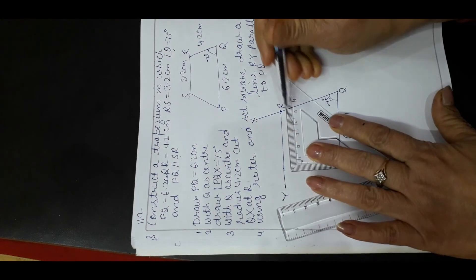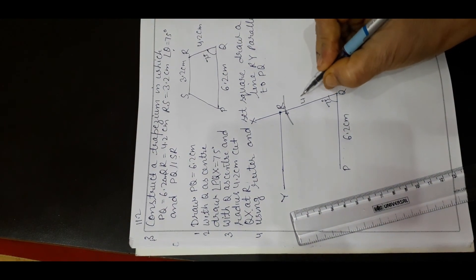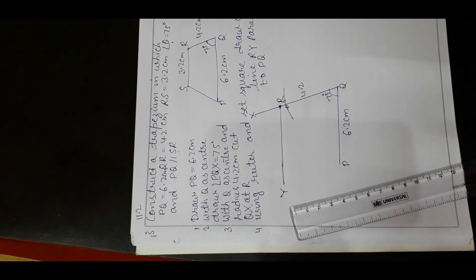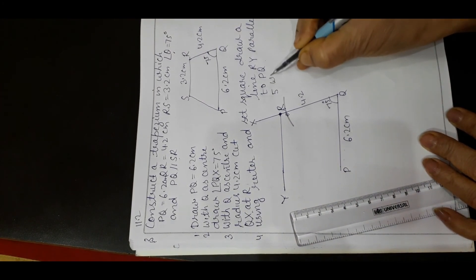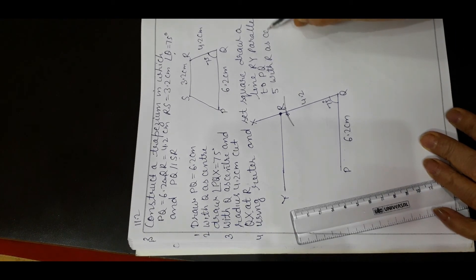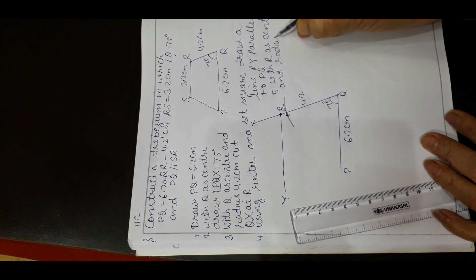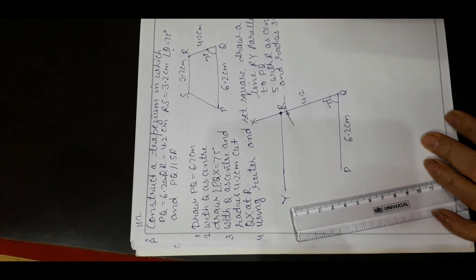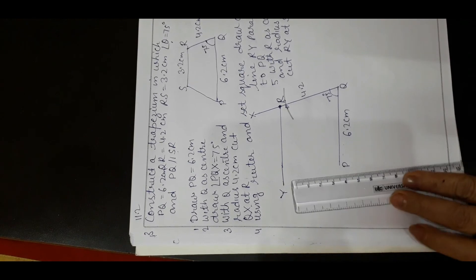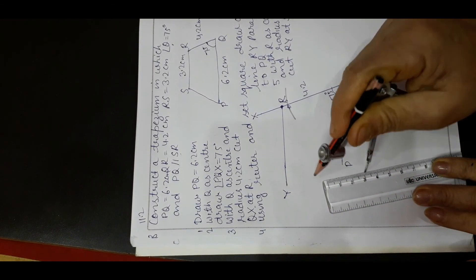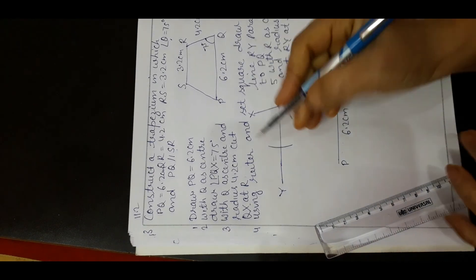R is this point. With R as center and radius 3.2 cm, cut RY at S. Take 3.2 cm, and cut the line at point S.